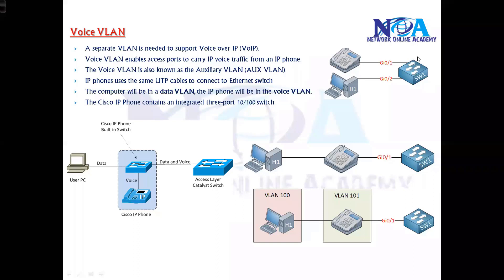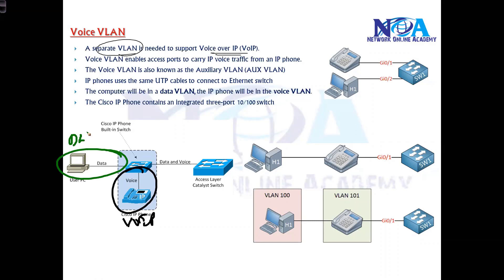The next thing we'll talk about is Voice VLAN. We have already covered some of the basics. Voice VLAN is generally used for sending VoIP traffic because we'll be using a separate VLAN for VoIP traffic, and there will be a separate VLAN for data traffic. The previous VLANs we created come under data VLAN, and the VLAN we are going to create here will be a voice VLAN, also called an auxiliary VLAN.